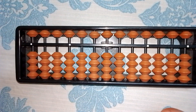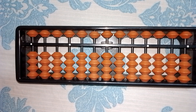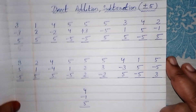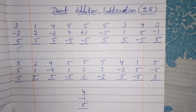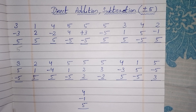We must use the thumb finger for addition of lower beads and the index finger for subtraction. For the upper bead, use index finger for both addition and subtraction. I hope today you understood addition and subtraction of five on abacus. If you have any doubts, please ask in the comment section. Thank you for watching — if it is useful, please like, share, and subscribe. Namaste.